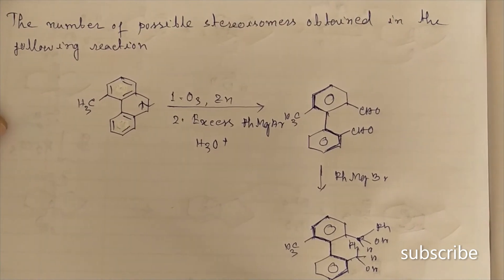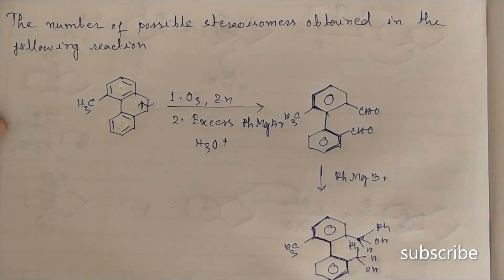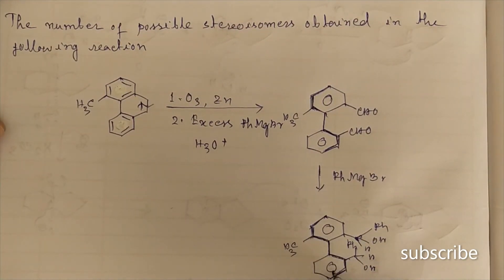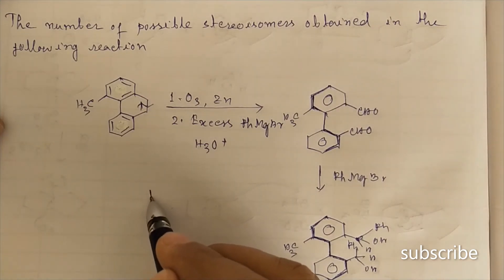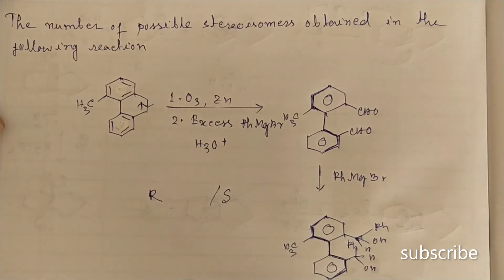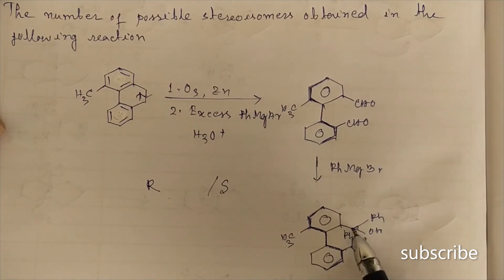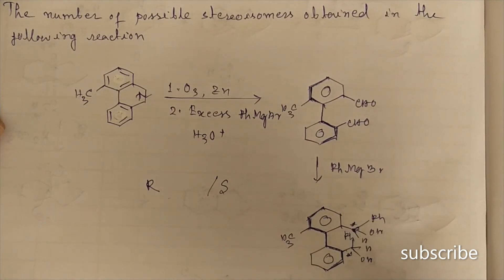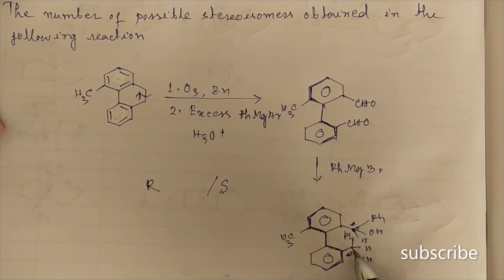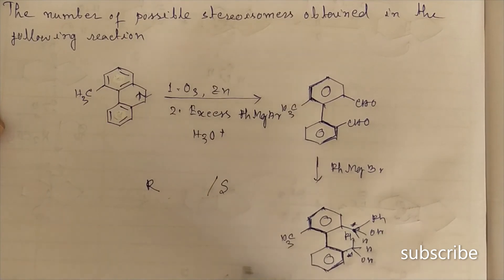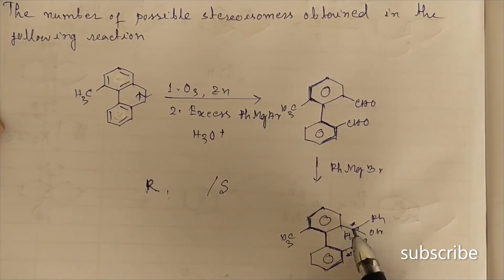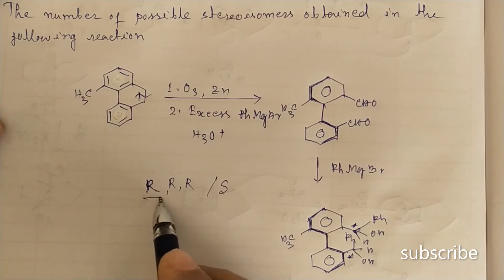We need to determine the number of possible stereoisomers. Due to atropisomerism, two configurations can result — either R or S at the axial chirality center. Additionally, when the phenyl group attacks each CHO carbon, each of those carbons also becomes a chiral center and can be either R or S. So there are three stereocenters total: the atropisomeric axis, and the two carbinol carbons. Let's say one combination is R, R, R.